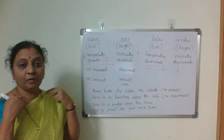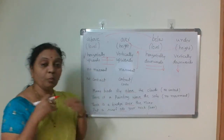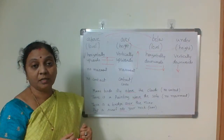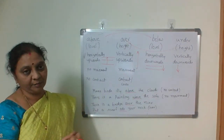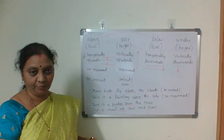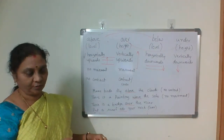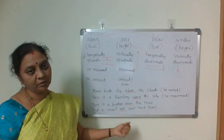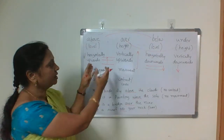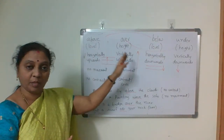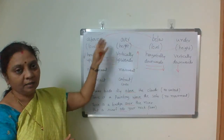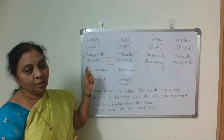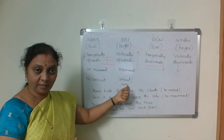'Put a jacket over your shirt' — you want to cover something, so use 'over', not 'above'. And 'He jumped over the wall' — there is movement also. So the major difference is: 'above' is horizontally upwards, 'over' is vertically upwards; 'above' talks about level, 'over' talks about height; no movement vs. movement; no contact vs. contact or cover.